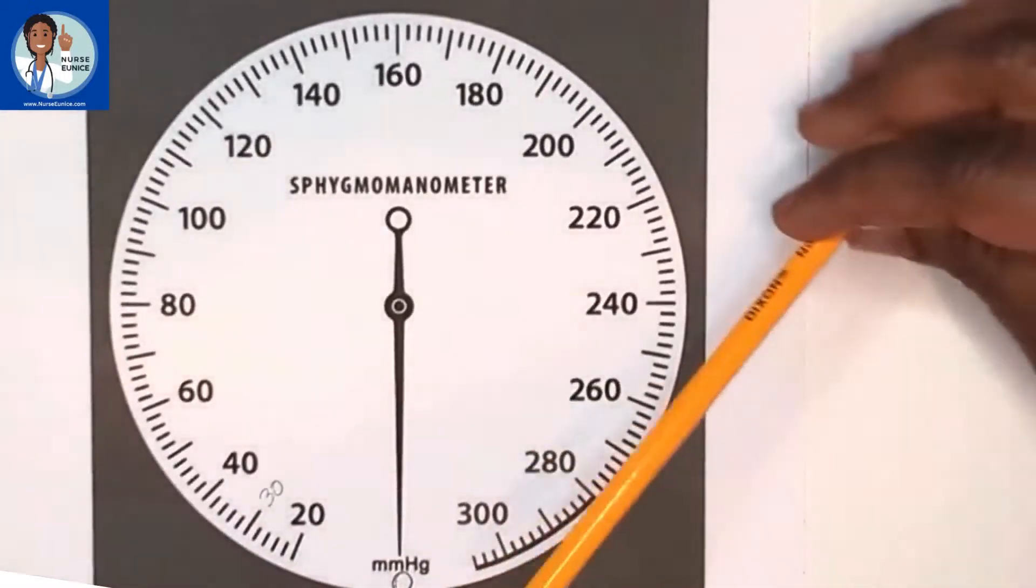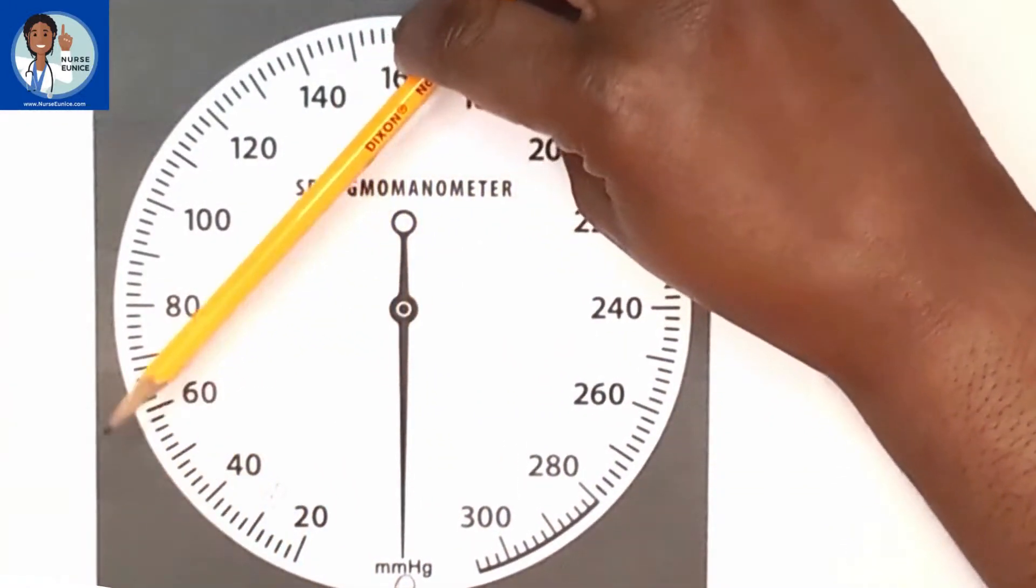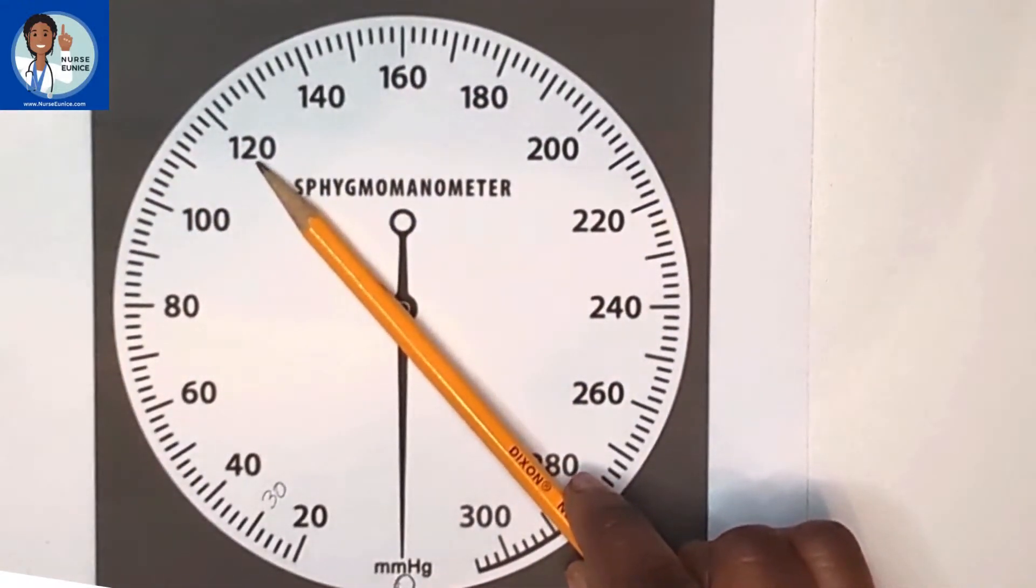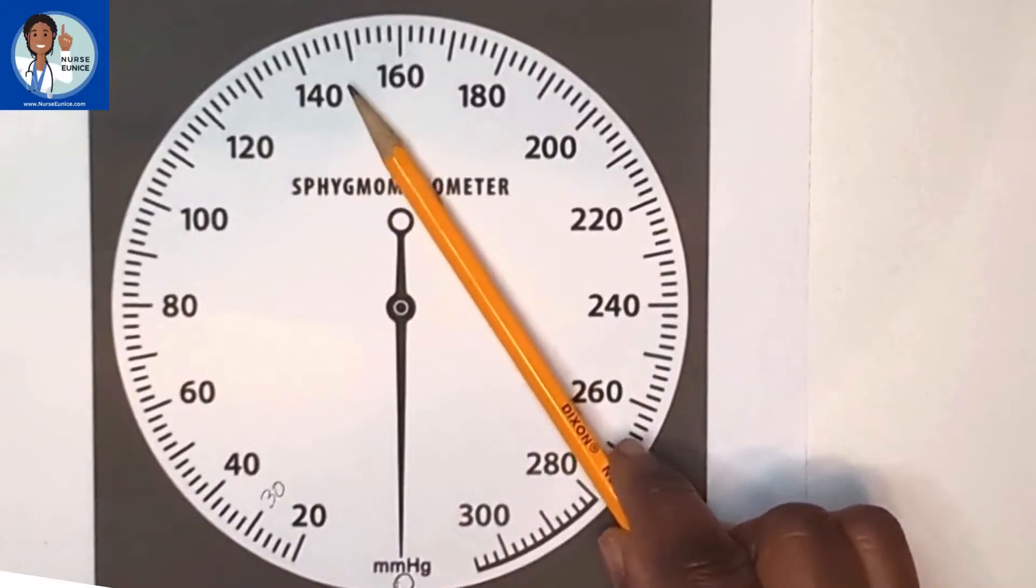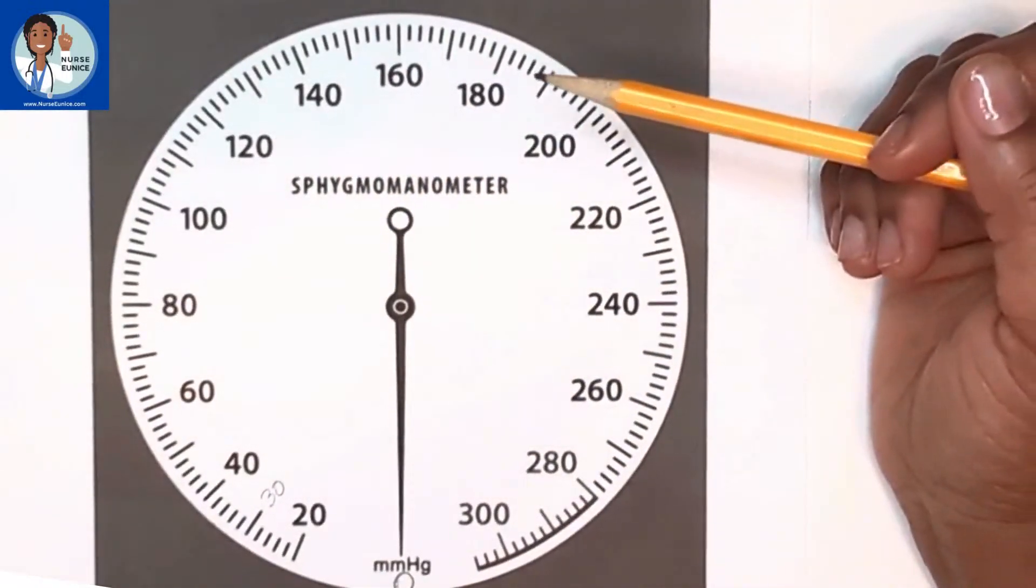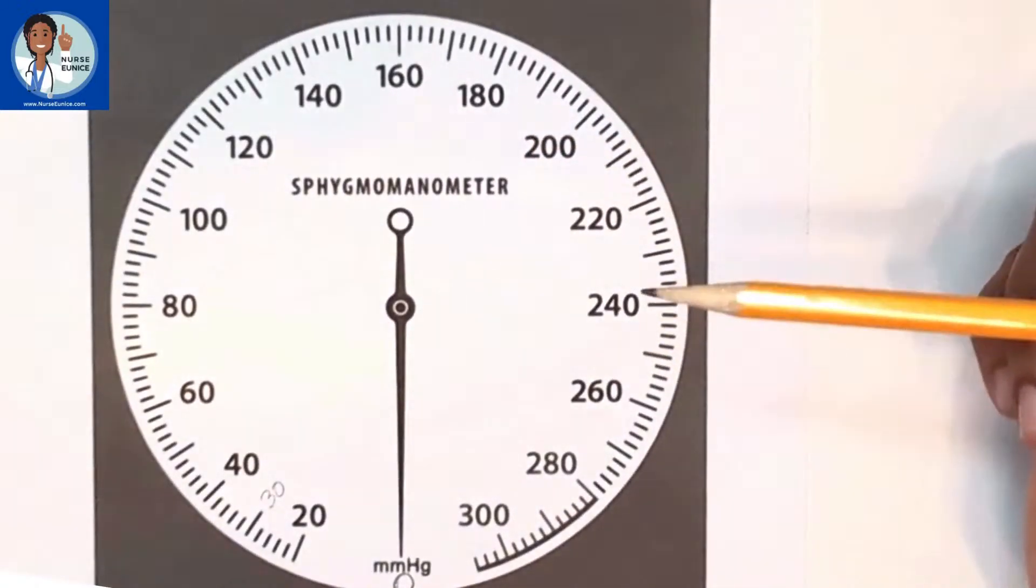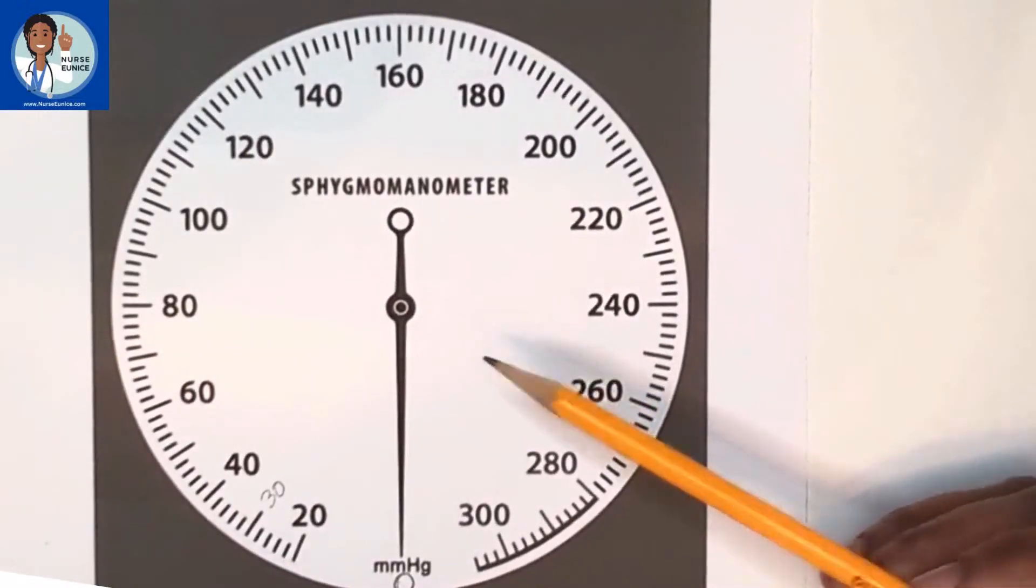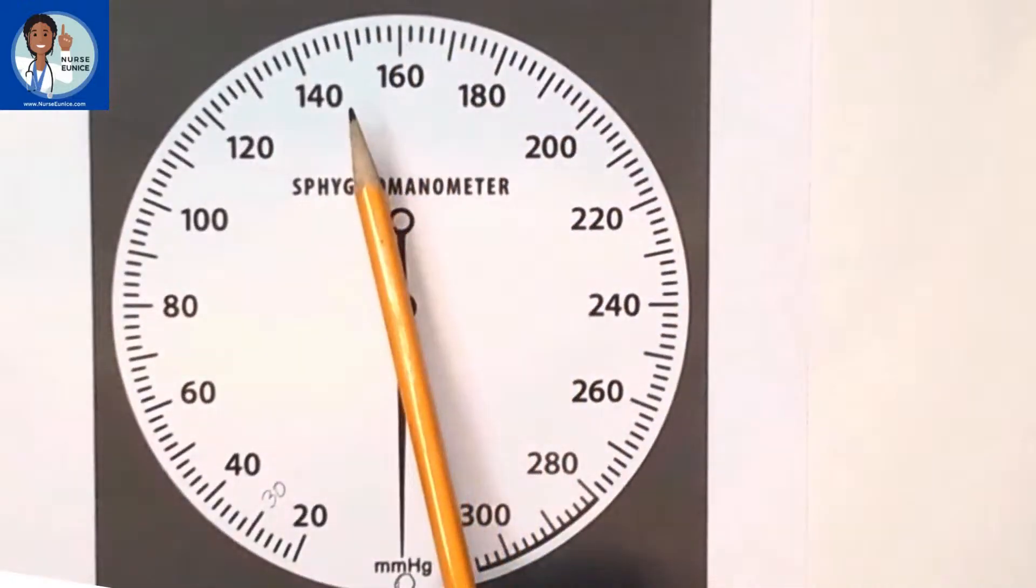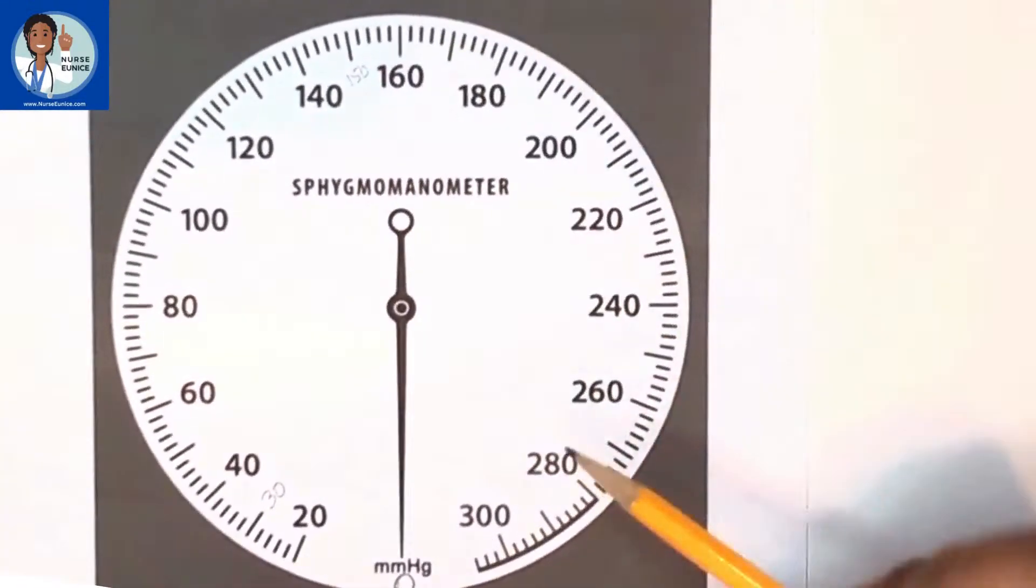Now I want you to pretend as if we are inflating the bulb. We're pumping. Our patient told us that their systolic blood pressure is normally 120, so we're just going to take it 30 above to 150. Now that's the cheat way. When you're in nursing school, they may teach you a little bit differently, but I'm going to show you the quickest way possible. You would actually inflate the pump to 150, and then you start.